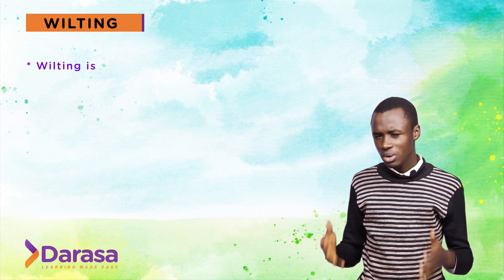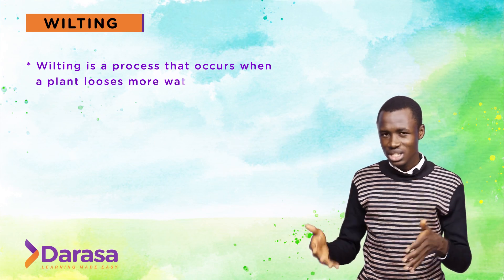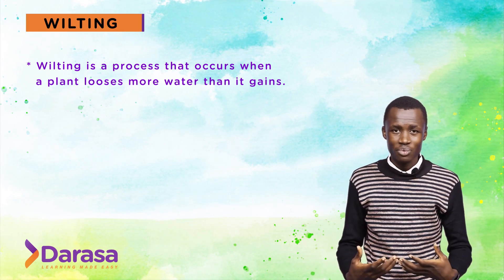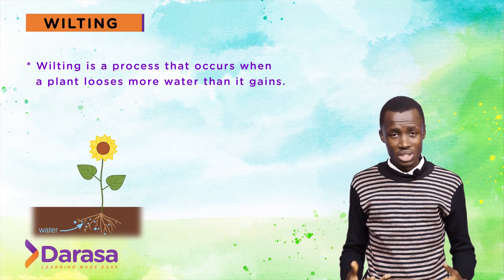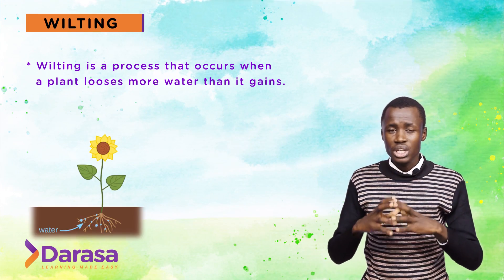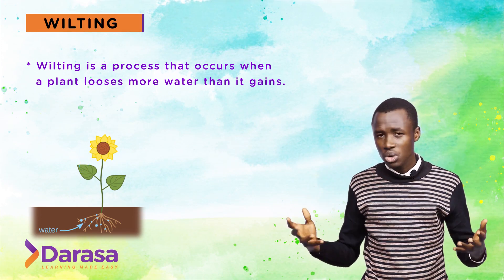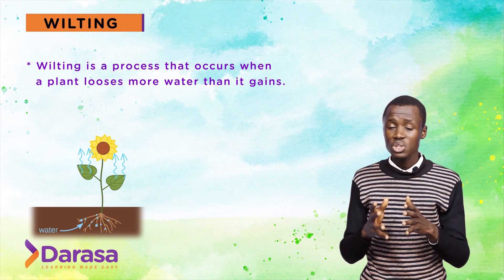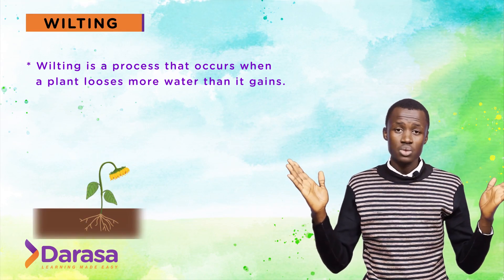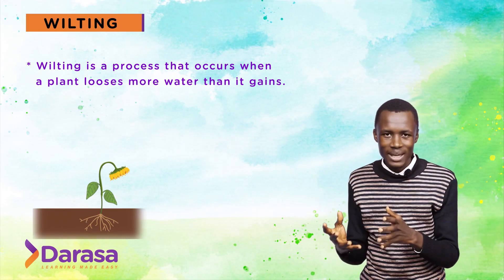Wilting is a process that occurs when a plant loses much more water than it actually gains. A plant gains water through absorption through the roots. So when it loses more water through transpiration and evaporation — much more water than it gains — then eventually that particular plant will droop, the leaves will slacken. That process is called wilting.